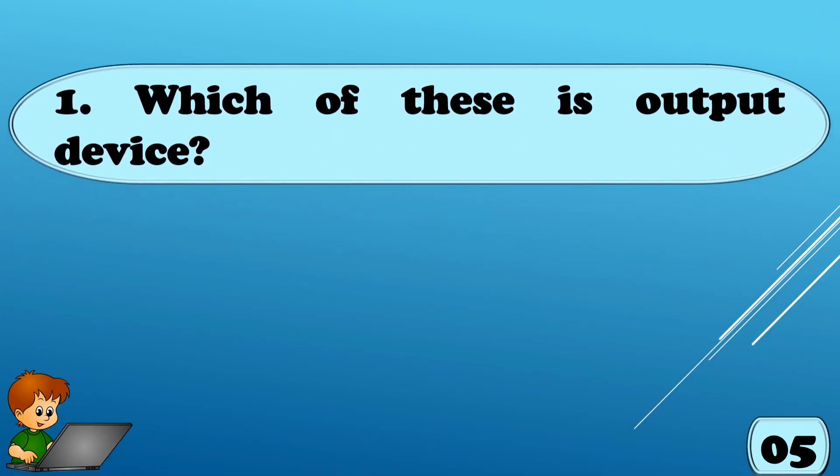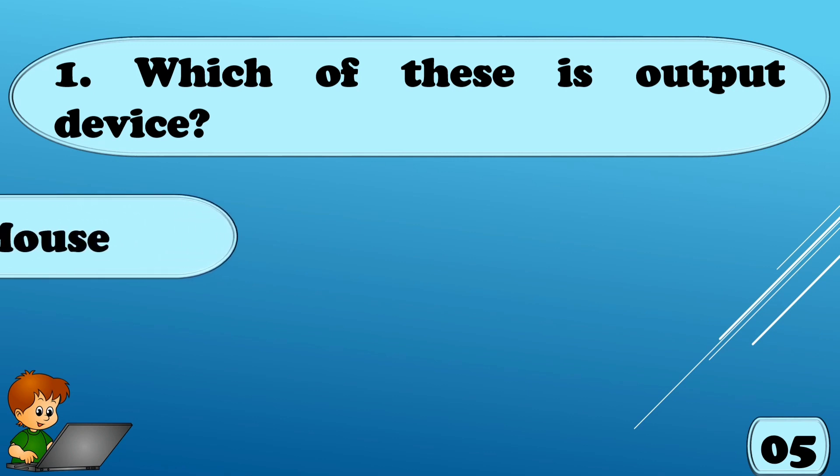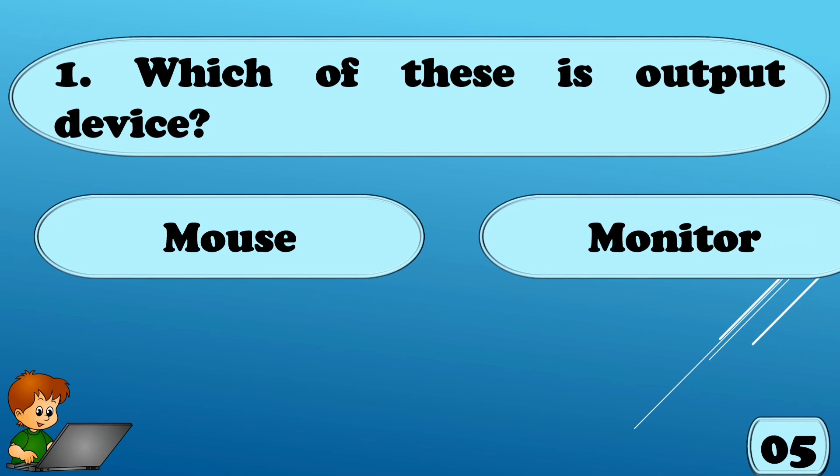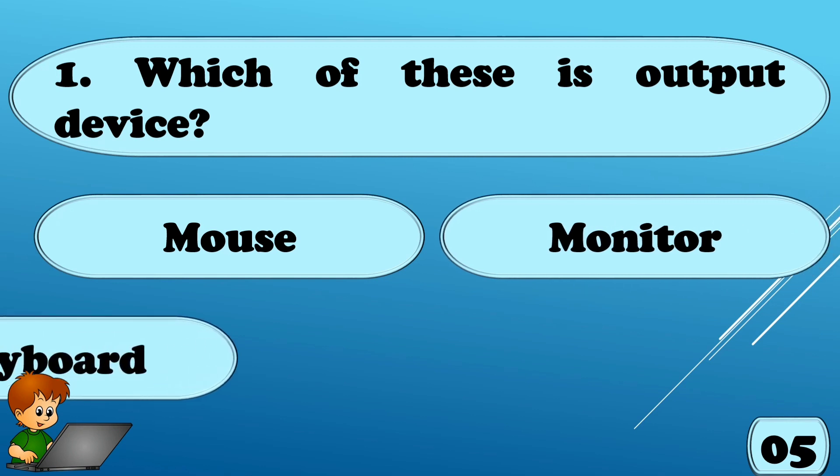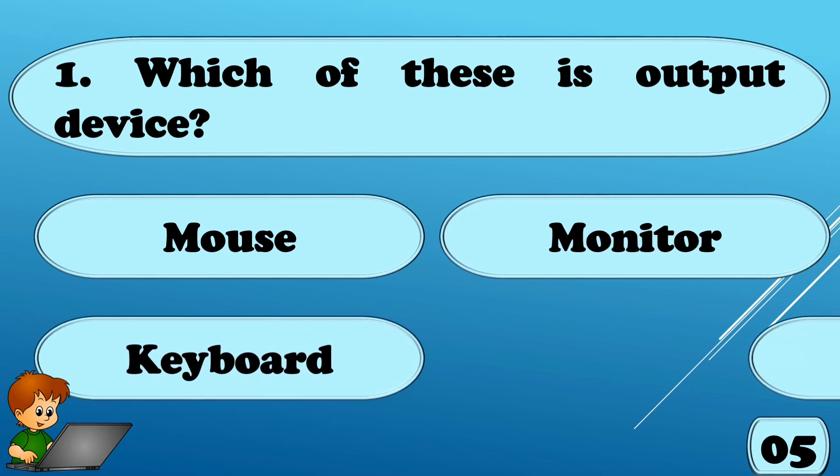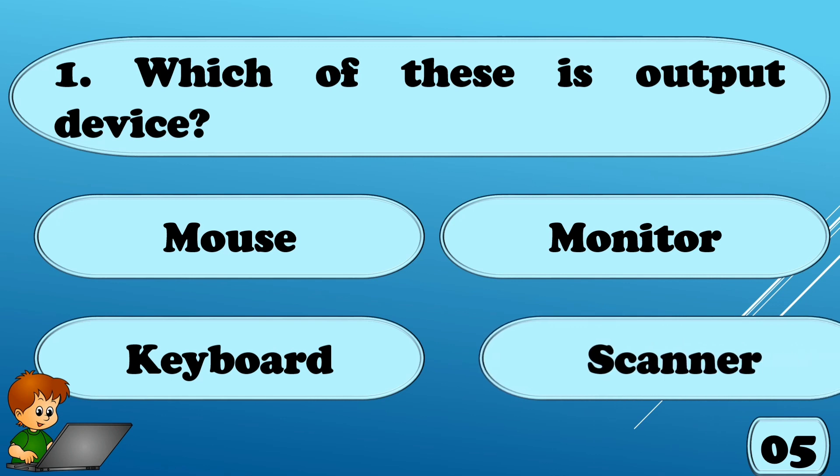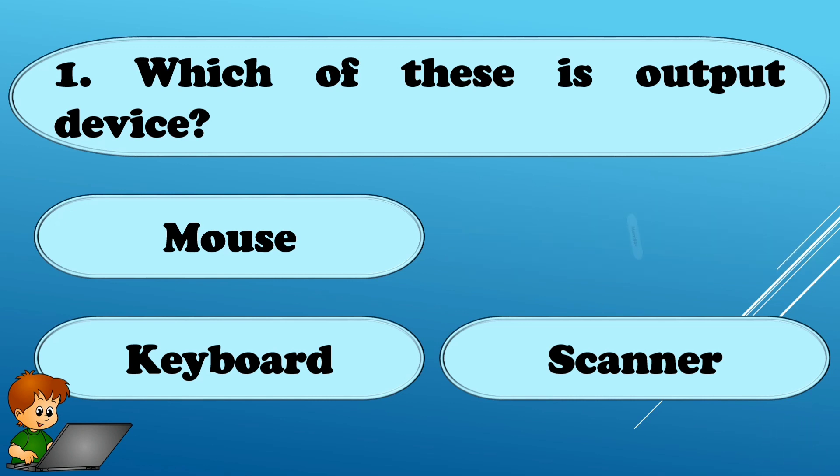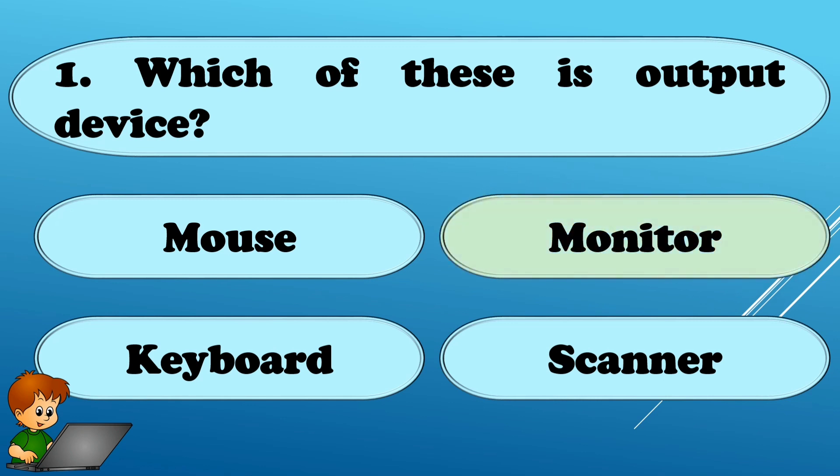Which of these is output device? Options are A. Mouse, B. Monitor, Option C. Keyboard, or Option D. Scanner. The correct answer is Monitor.